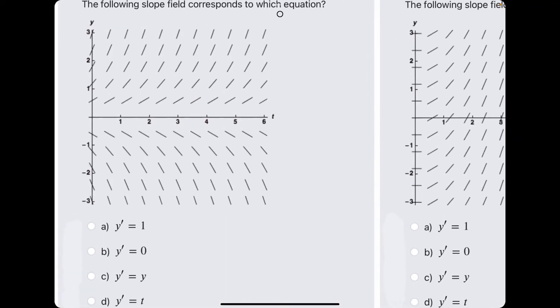It looks like, say, at y equals about one half, that all of these little tick marks have the same slope. Same at y equals 1, y equals 2, etc. So like all of these lines have the same slope, these lines have the same slope, these lines.